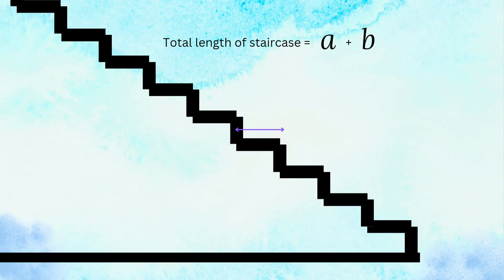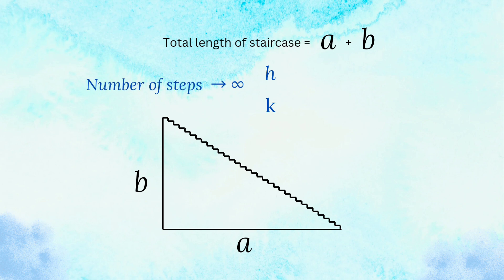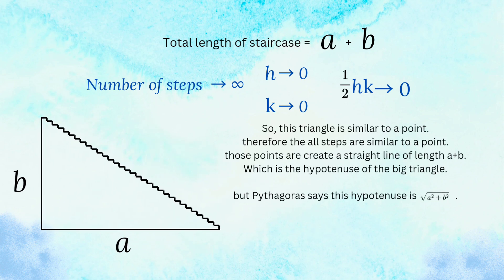Now, considering the horizontal length of each step is H and the vertical length of each step is K, we can say each step is a right-angle triangle which has a base of length H and an altitude of length K. If we increase the number of steps to infinity, then both H and K will tend to zero. In other words, the area of this triangle tends to zero, so this triangle is similar to a point. Therefore, all the steps are similar to points, and those points create a straight line of length A plus B, which is the hypotenuse of the big triangle.